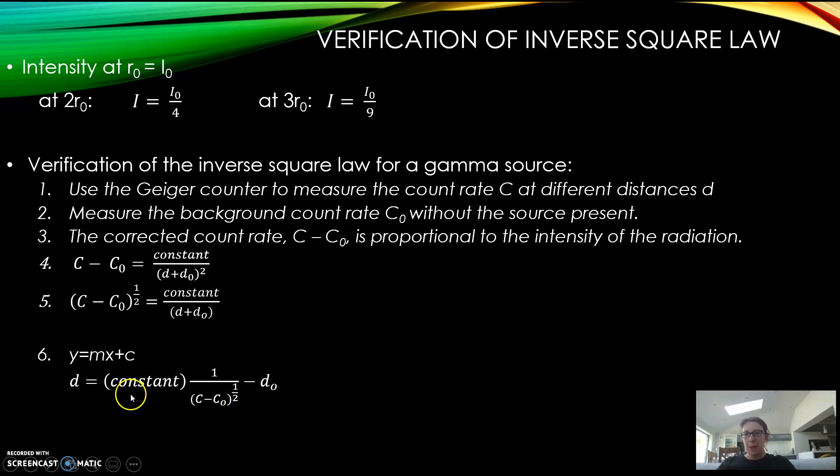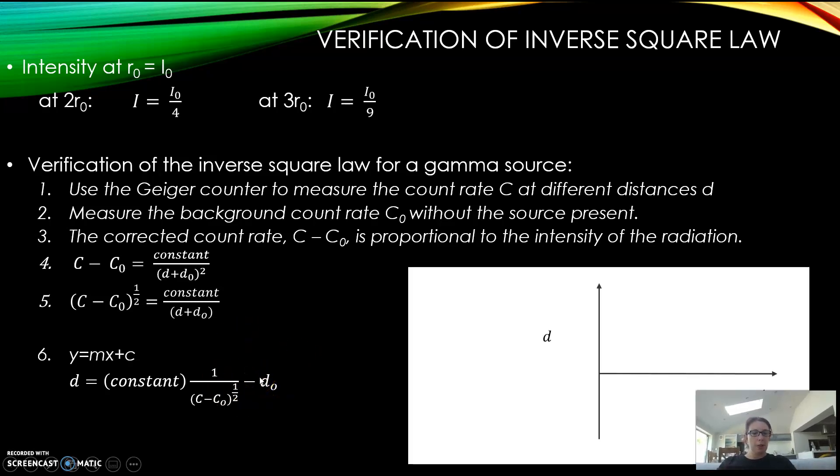If you compare it to y equals mx plus c: on the y-axis you plot d, on the x-axis the gradient will be a constant times one over the square root of the corrected count rate, and then you have this term minus d₀. When you plot it on a graph it looks like this, and you can see the y-intercept here minus d₀ - that'll tell you how big your container is. We do a required practical on this, so you will get to see this in action.